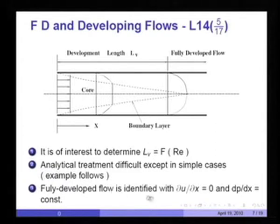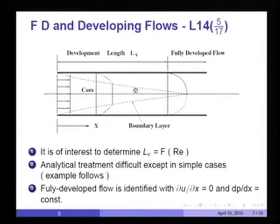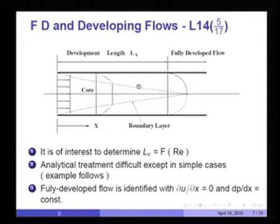Fully developed flow is identified with du/dx equal to zero, where u is the velocity in the axial direction, and the pressure gradient in the axial direction is constant. What is of interest from a practical standpoint is the estimate of development length L_v, which is a function of Reynolds number — the higher the Reynolds number, the higher will be L_v. In the entrance region, analytical treatment is usually quite difficult except in very simple cases.